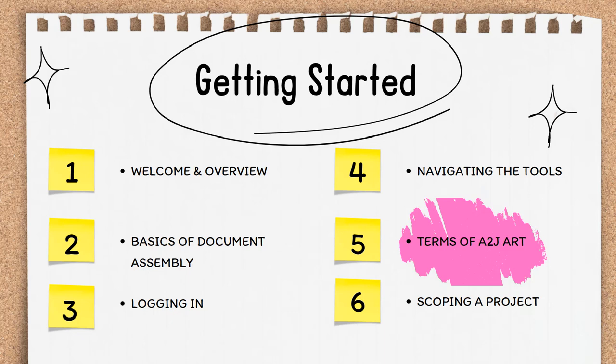Welcome to video 5 of Section 1, Getting Started. In this video, we're going to learn the vocabulary of document automation with A2J Author. These are the terms of art that describe tools within A2J Author, components of the document assembly process, or little bits of programming that you might not be familiar with, especially if you are coming to us as a legal professional rather than a programmer.